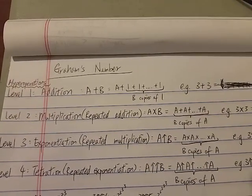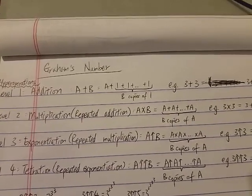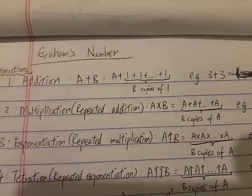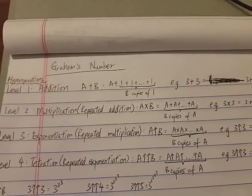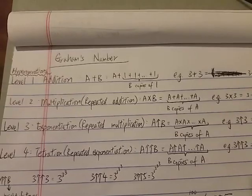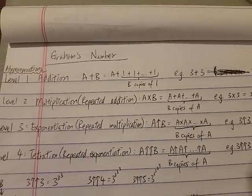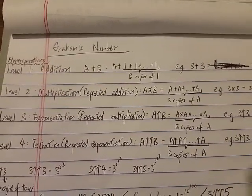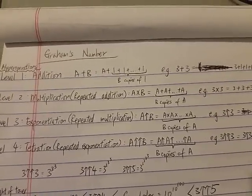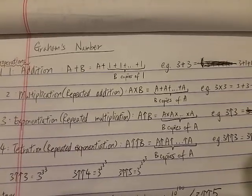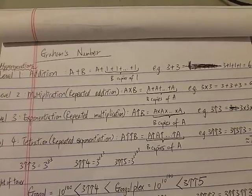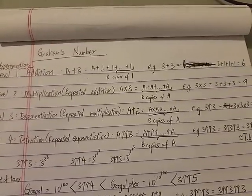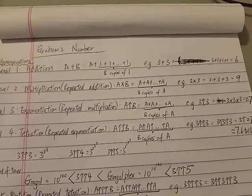Hi guys, this is Big Numbers Part 2. If you haven't watched Part 1, make sure you watch that one first. Today we're going to talk about a famous big number: Graham's number. It's named after mathematician Ronald Graham, who discovered it in the 1970s. It's a solution to a problem in Ramsey theory. In this video, we're just going to focus on how big Graham's number actually is — not its purpose or story. You can search for that online; there are great articles about what it's used for.